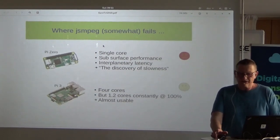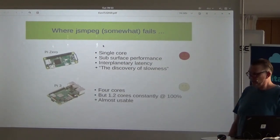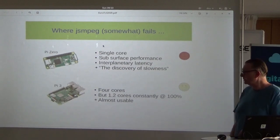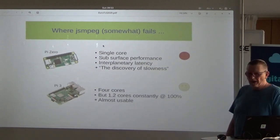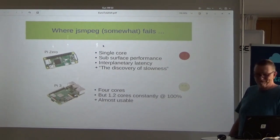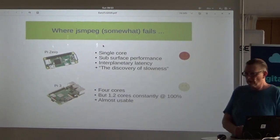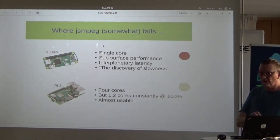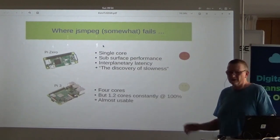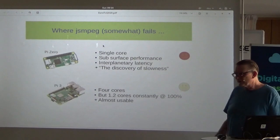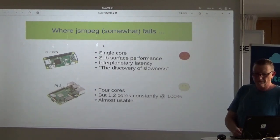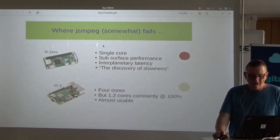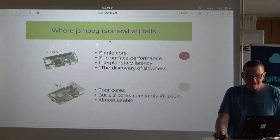My goal was to have it on the Pi 0, but this failed because the Pi 0 is too slow. A Pi 3 with four cores is almost usable, and I hope the new Pi 4 will have decent performance comparable to a laptop. It works on the Pi 3, but it's even more sluggish than you observed. That was the JS MPEG stuff.